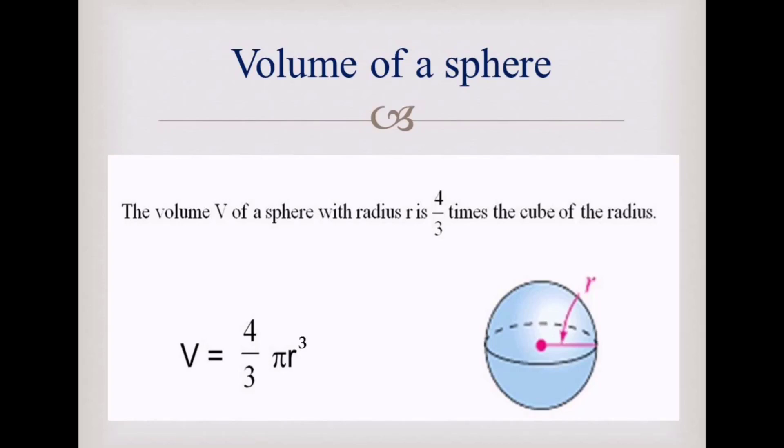If I have a diameter and I need to find the radius, what am I going to do? I'm going to divide the diameter by 2. The radius equals half the diameter. The diameter connects between the two sides of the circle and passes through the center, while the radius goes from the center to only one side of the circle.